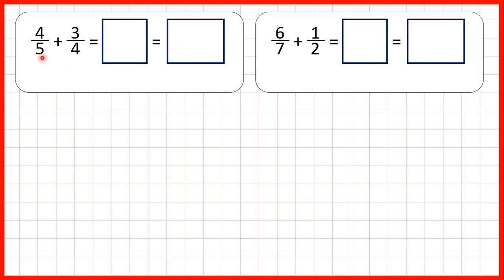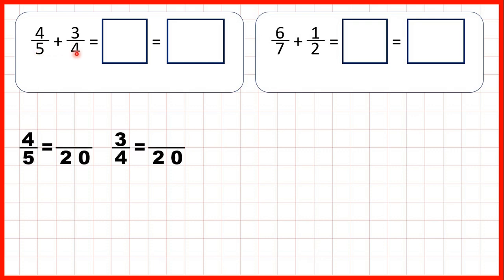First we have four-fifths plus three-quarters. We need to find the lowest common multiple of five and four, which is twenty. Twenty is the lowest number that's in both the five and the four times table, so we can find equivalent fractions to four-fifths and to three-quarters which both have a denominator of twenty, because to add fractions we need the denominators to be the same.